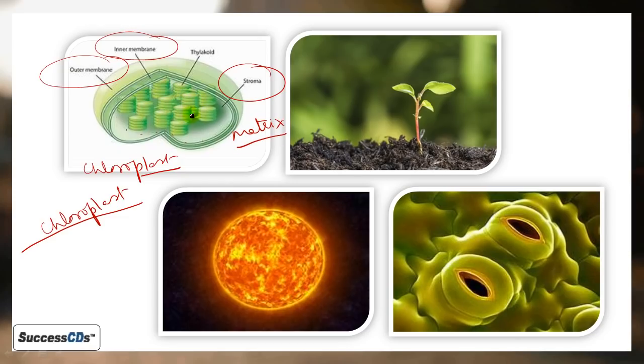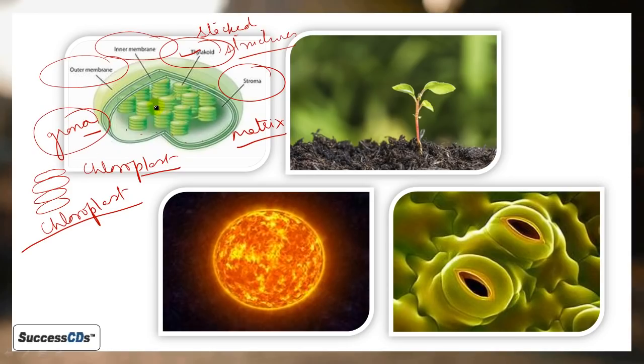Inside you can see stacked structures, like coins piled up. These structures are called grana. When it's a single structure, we call it thylakoid. But when thylakoids are stacked on top of each other, we call them grana. They are connected by intergranal thylakoids. For thylakoid, we can also use the simpler term lamellae.